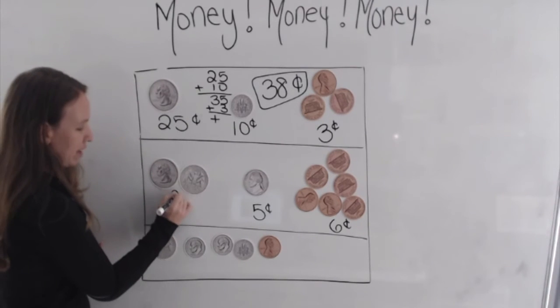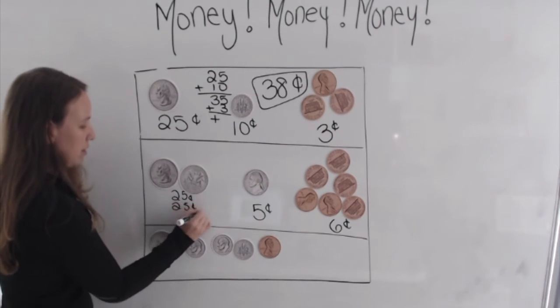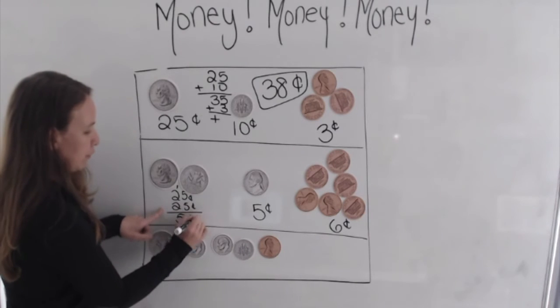Well, each one is worth 25. So 25 cents and 25 cents makes, well, that's 10 carry the one, 50 cents.